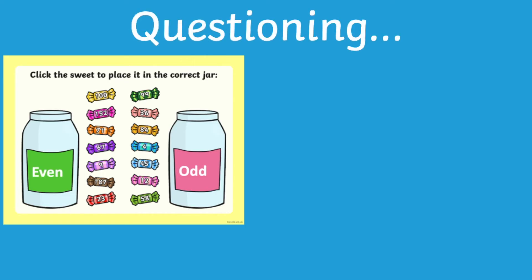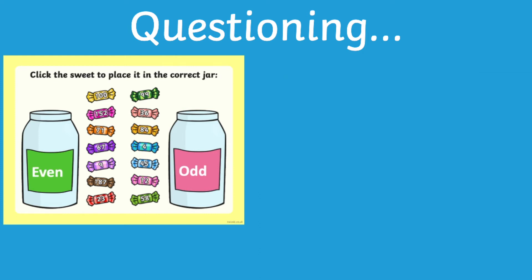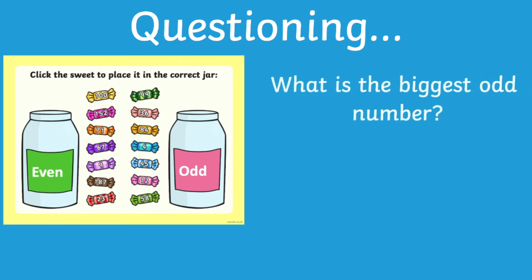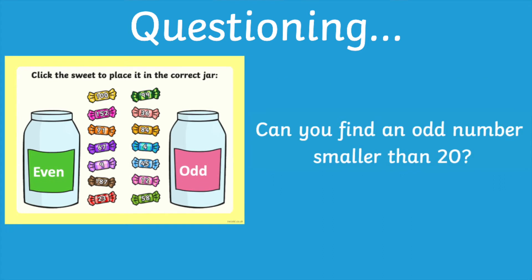This resource also provides lots of opportunity for questioning, such as how many odd numbers are there, how many even numbers are there, and you could even think about the size of the numbers — so which is the biggest odd number and which is the smallest even number. You could even ask your children to find certain numbers, for example can you find an odd number that's smaller than 20.